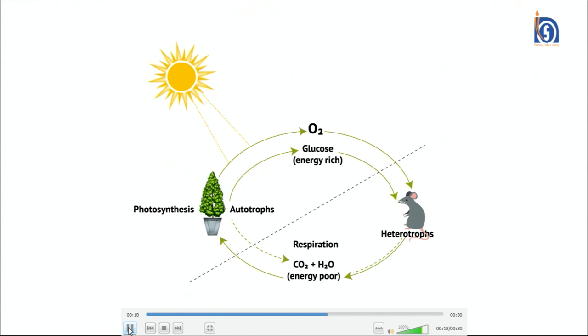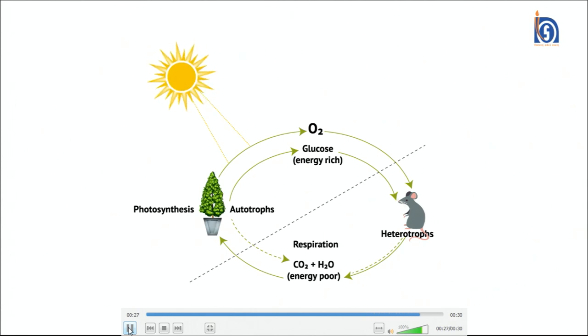The clip shows how heterotrophs use this energy-rich molecule glucose and break it down through respiration into water and carbon dioxide, releasing a lot of energy. Photosynthesis and respiration are both happening simultaneously: photosynthesis synthesizes carbohydrates and respiration breaks down the same carbohydrate for releasing energy used for the repairs and growth of the body.